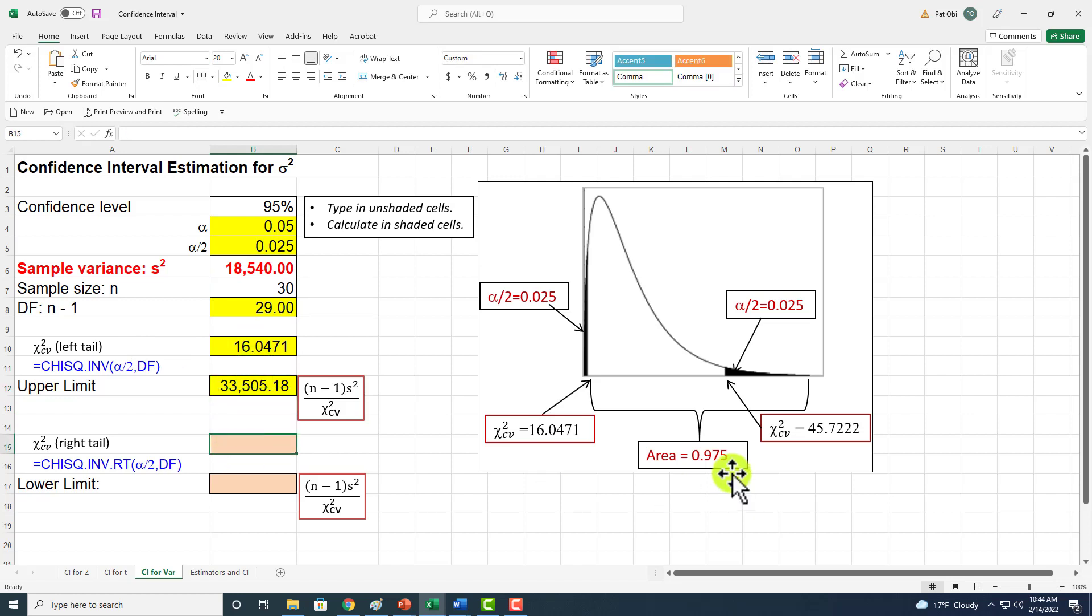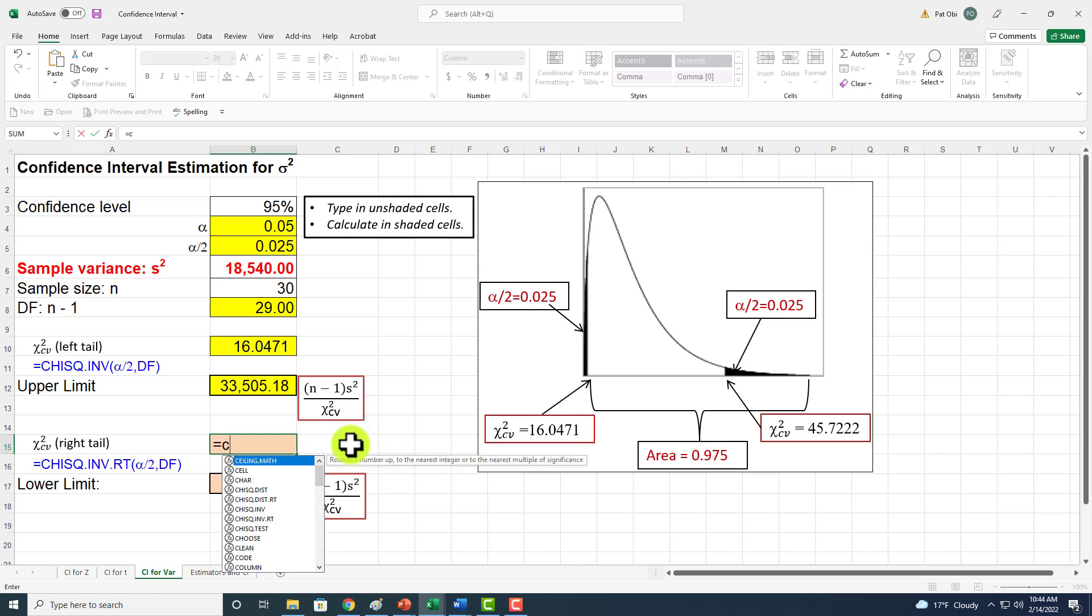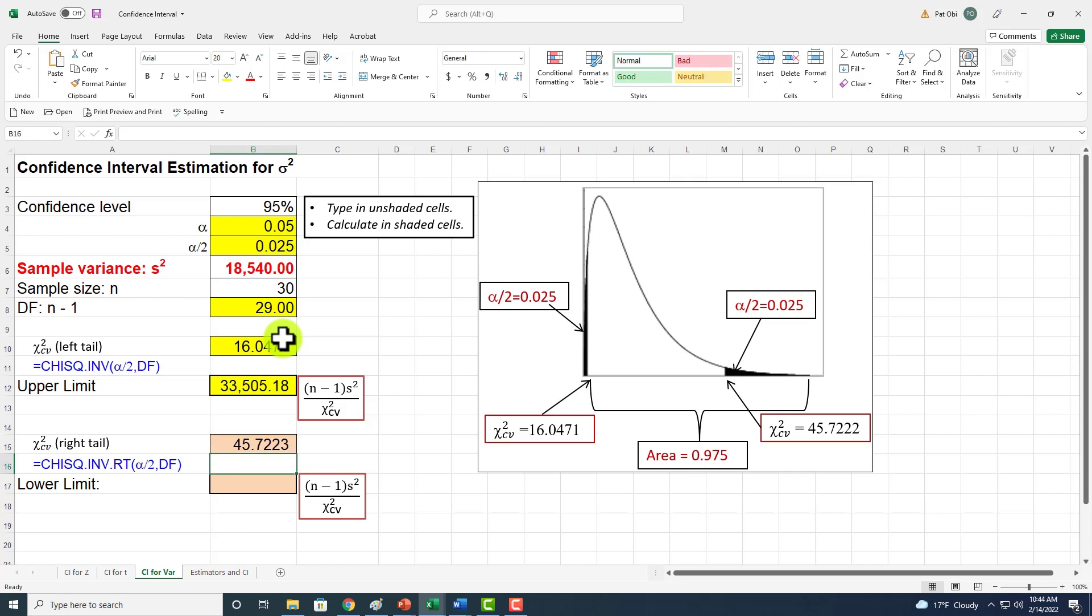Finally, we get the right tail critical value, which will return the inverse of the right tail probability of the chi-squared distribution. Start typing equal CHI.INV.RT and double click it. Click on alpha over 2, comma, and then click on degrees of freedom, close parenthesis. That's our critical value on the right tail.